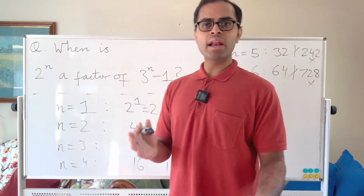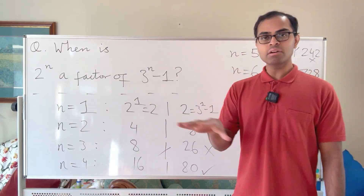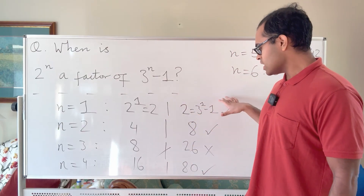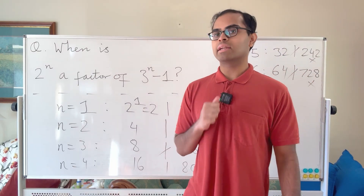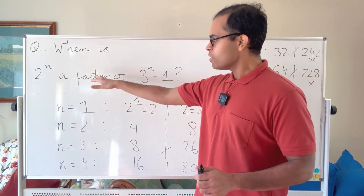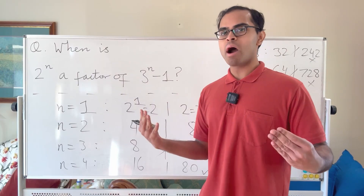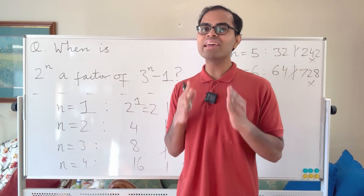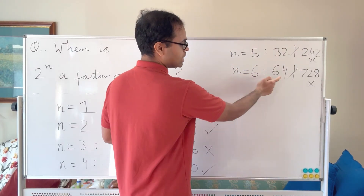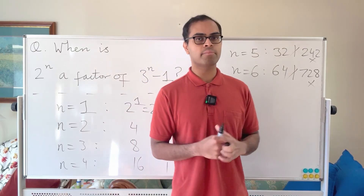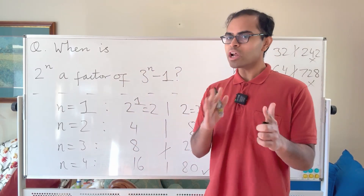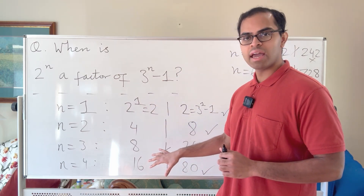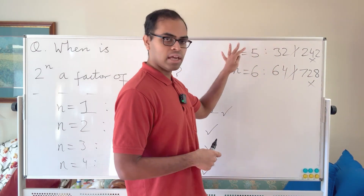What's the pattern? A reasonable guess is the only values are n equals 1, 2, and 4. The heuristic behind that guess: 2^n grows as a bigger and bigger power of 2, and for it to divide 3^n minus 1 requires 3^n minus 1 to be highly divisible by 2 — which seems less and less likely for larger n.